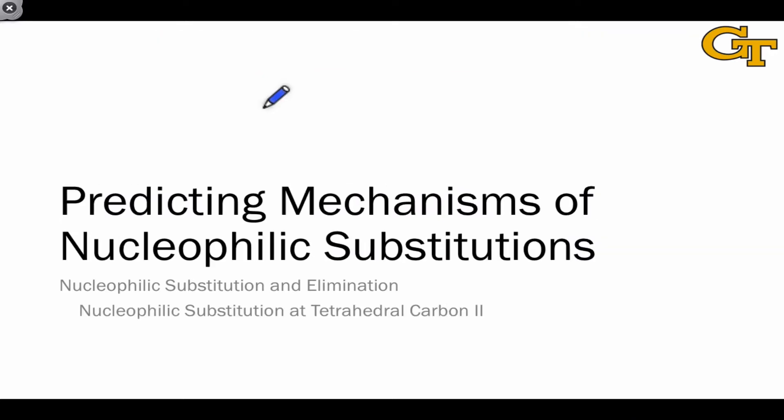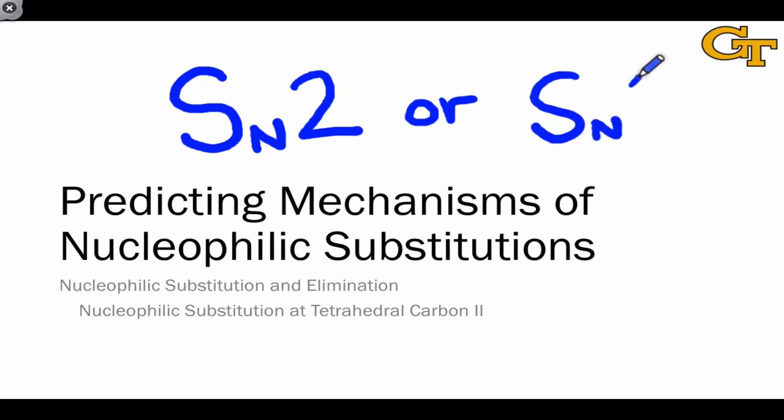Let's begin with the discussion of how to predict the mechanism of a nucleophilic substitution reaction. The essential question here is whether the reaction is concerted involving an SN2-type mechanism, or the reaction takes place in a stepwise fashion via SN1. Given the structures of the nucleophile and electrophile in a particular reaction, and some other aspects of the reaction conditions, we can predict whether SN2 or SN1 will occur with relative ease.